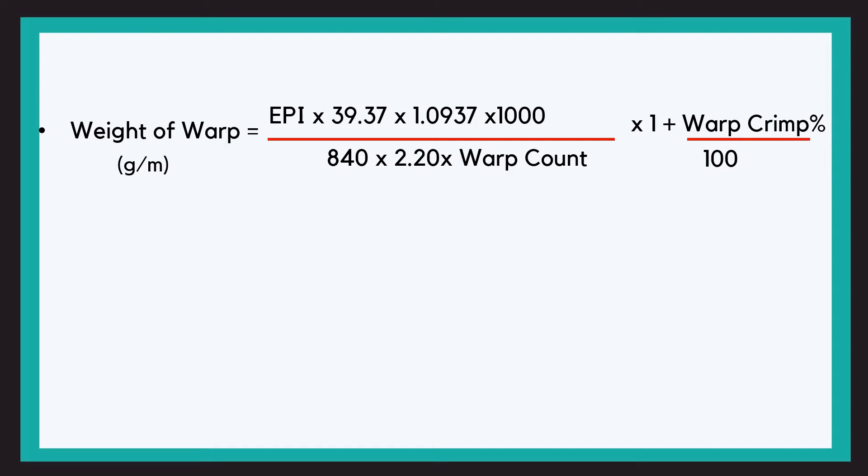Then we multiply by 1.0937 to convert it into yards, and 1000 I told you why. Now divided by 840 × 2.20 × warp count. The warp count is the English count. So English count formula we know: number of hanks of 840 yards weighing in one pound. So for that we divide by 840 and 2.20.